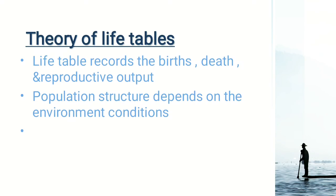The structure of a population is specific to a species or subspecies and its environment. Life tables relate to life expectancy and mortality, providing data so that we can predict the future population.